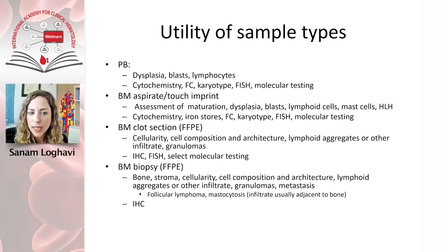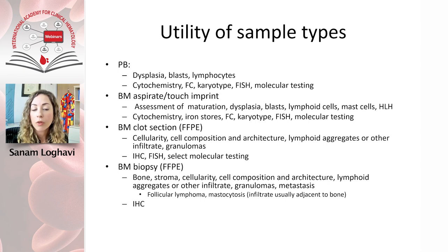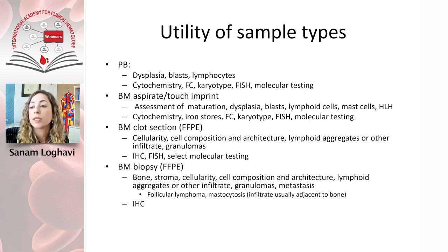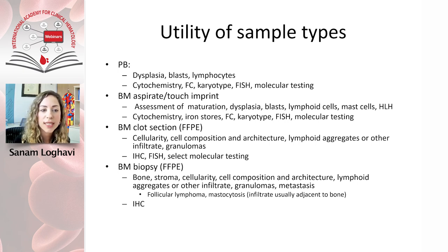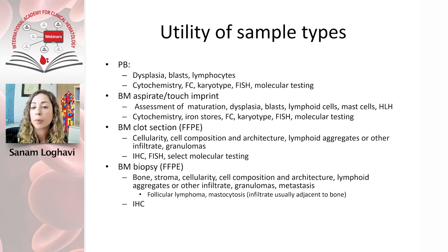Starting with sample types: when a patient undergoes a bone marrow biopsy, we receive peripheral blood, a bone marrow aspirate, the bone marrow clot — which is the spin-down of the aspirate — and the bone marrow trephine or core biopsy. On the peripheral blood, we can assess for dysplasia, presence or absence of blasts, morphology of lymphocytes and white cells, and circulating nucleated red blood cells. We can also do flow cytometry, cytochemical testing, karyotype, FISH, and molecular testing on peripheral blood.